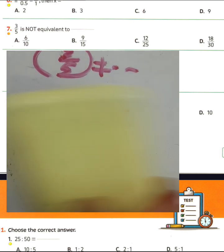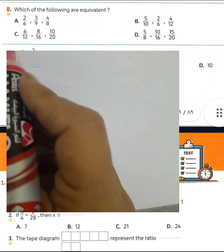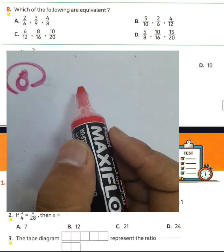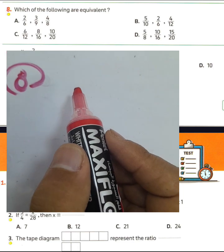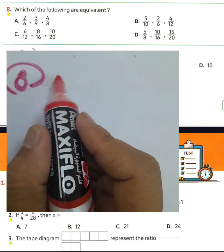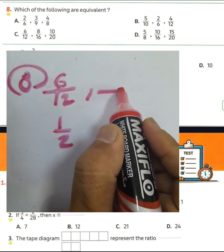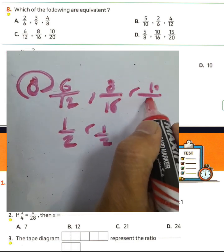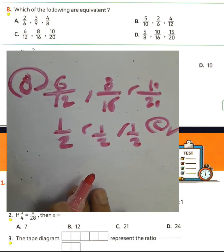Question eight: which of the following are equivalent? We want to find a ratio between three equivalent numbers. Look: 6 over 12 — 6 is half of 12. And 8 over 16 — 8 is half of 16. And 10 over 20 — also half. Then you must choose letter C. They are equivalent.